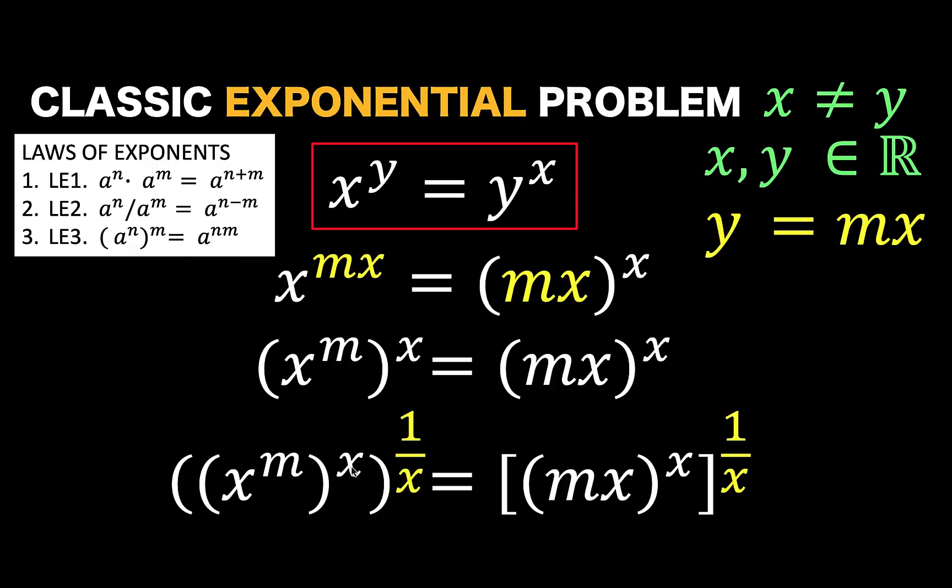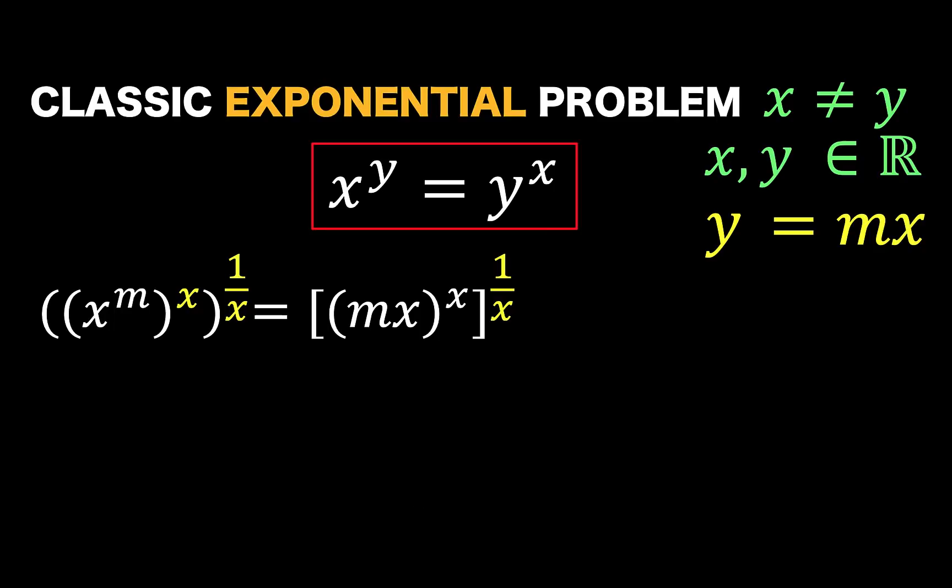And apply again law of exponent number 3. We can simplify this by simply multiplying the exponents, in this case, the exponent x times 1 over x. Now, since x times 1 over x are reciprocals, the left side is simply this base x raised to m,